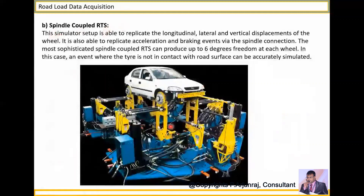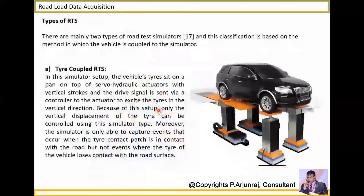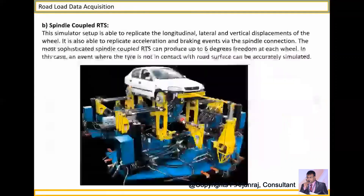The second type is the spindle coupled RTS. Unlike the tire coupled RTS which only measures vertical movement, this simulator replicates longitudinal, lateral, and vertical displacements of the wheel — all three. It also helps replicate acceleration and braking events through the spindle connection. On the spindle you can operate the brake, whereas in the tire coupled RTS only vertical wheel movement is simulated.